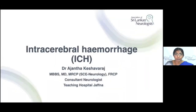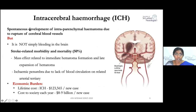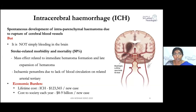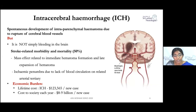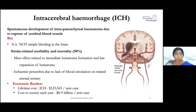Intracerebral hemorrhage is simply defined as a spontaneous development of an intra-parenchymal hematoma due to rupture of a cerebral blood vessel. It is an important cause of acute stroke, carrying almost 15% of acute strokes. It should not be considered simply as a bleed in the brain, because it causes increased morbidity for survivors and carries a mortality rate of about 50%.